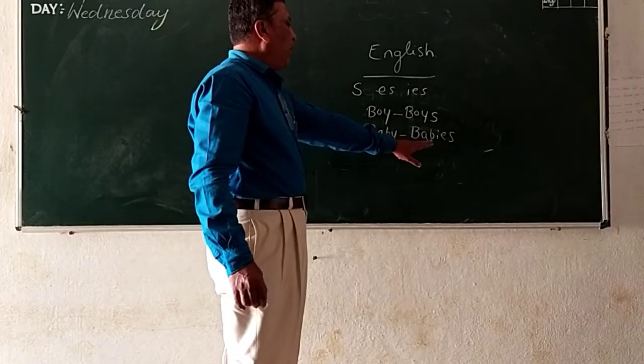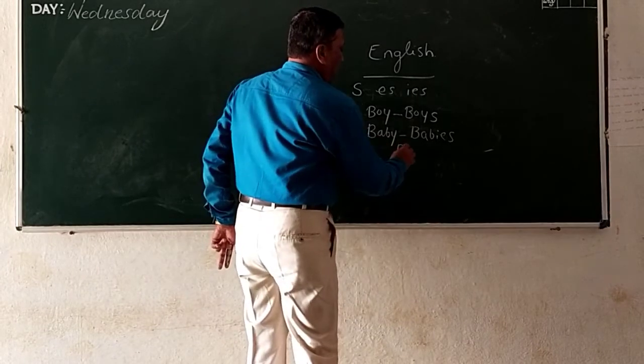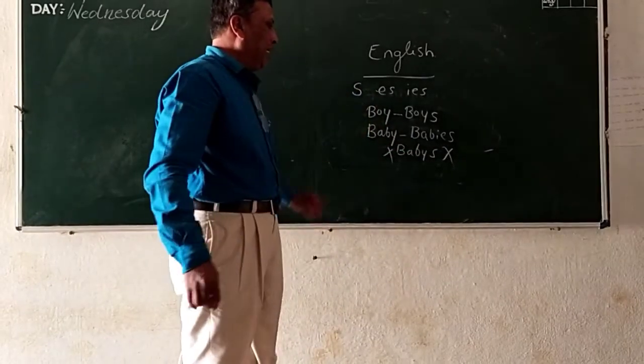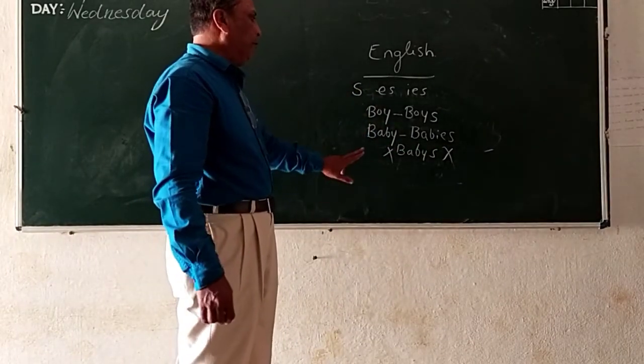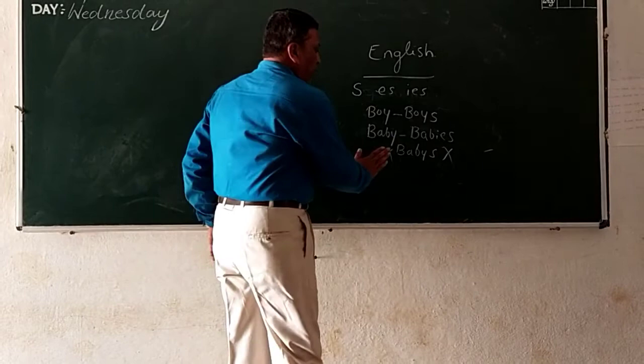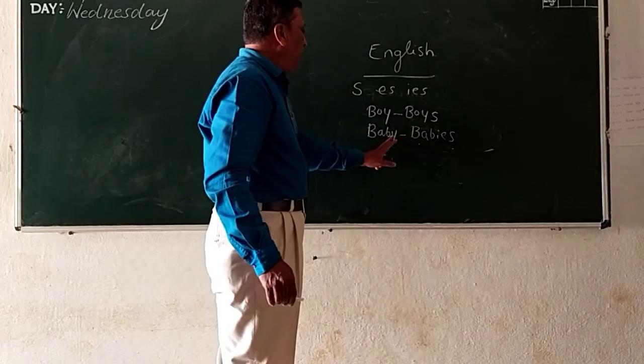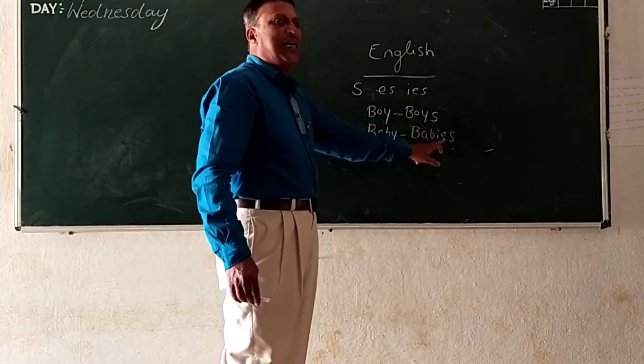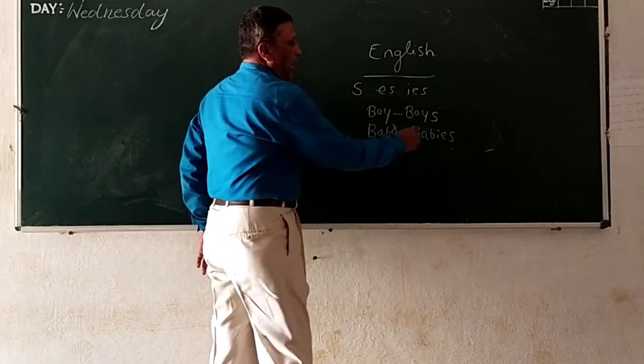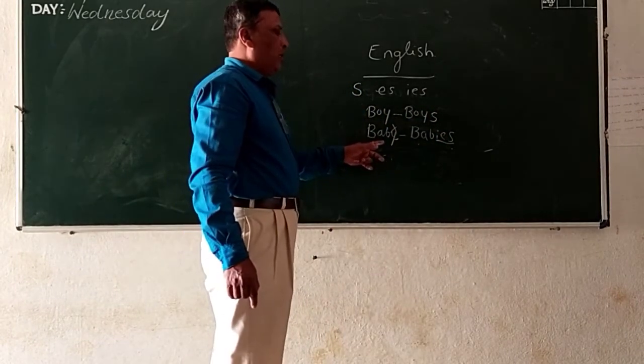So why we are going to put IES? If I put B-A-B-Y-S, it is going to be wrong. If Y appears here, we have to remove Y and put IES.